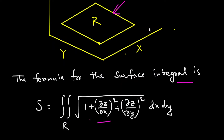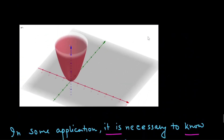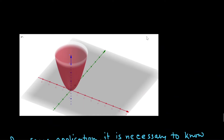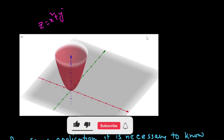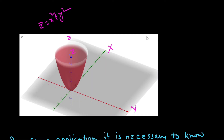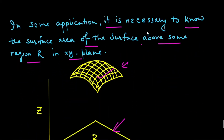The image of the given paraboloid is z = x² + y², which looks like this. The blue axis is the z-axis, and we also have the x-axis and y-axis. The paraboloid opens upward. We have to find the surface area of this paraboloid between the plane z = 0 and z = 1.